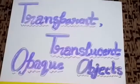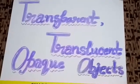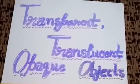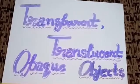Friends, today we are going to learn about different types of objects based upon the amount of light passed through them. They are transparent, translucent and opaque objects.